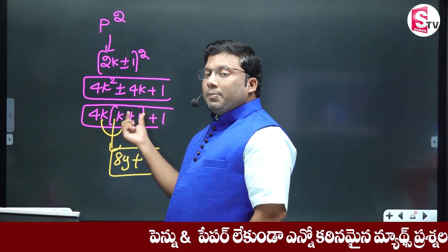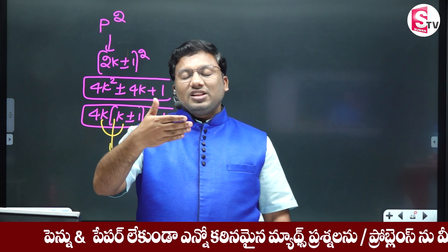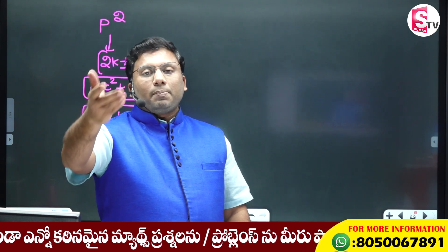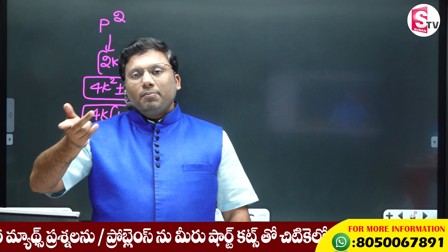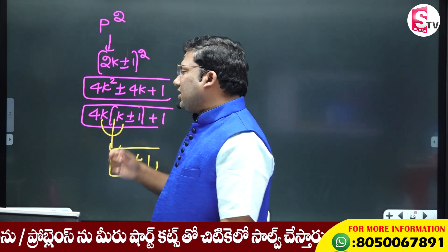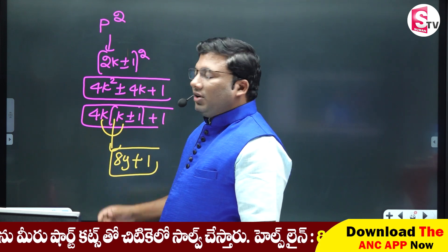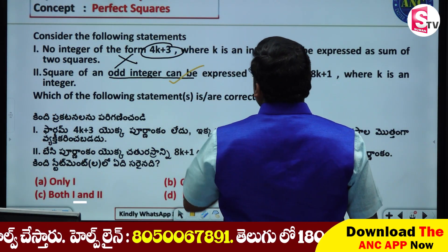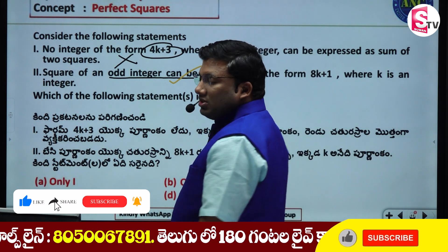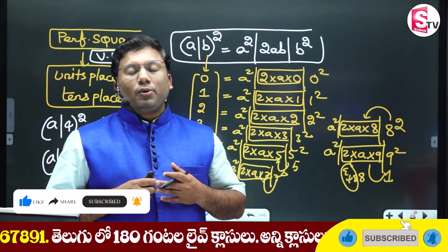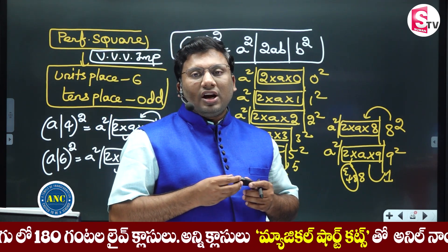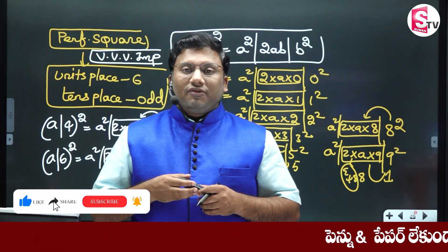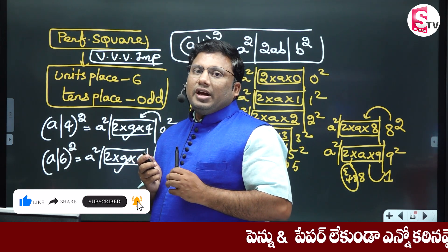K into K plus 1, or K into K minus 1. If you multiply consecutive numbers and divide by two, you get 2 into 4 plus 1. Dividing by eight gives 8K plus 1. So the formula resolves to 8K plus 1.